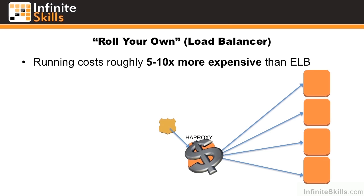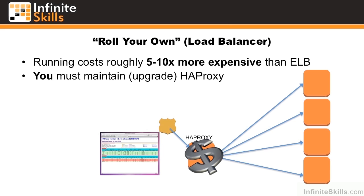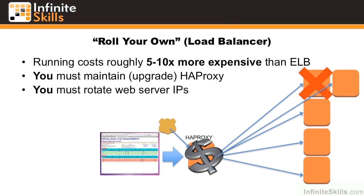Consider that when you do this, your running costs are going to be about 5 to 10 times more expensive than an ELB. You have to maintain and upgrade your HAProxy or Nginx installation. You have to rotate your web server IPs so that when a server goes down, you can spin up another one behind it. And you have to account for the fact that HAProxy is now a single point of failure — it doesn't matter how many instances you have behind that load balancer. If you lose the load balancer, you lose your application.